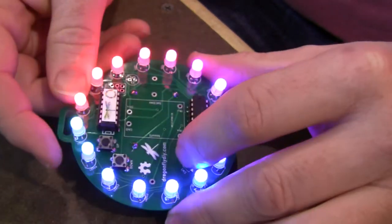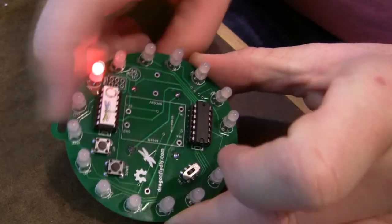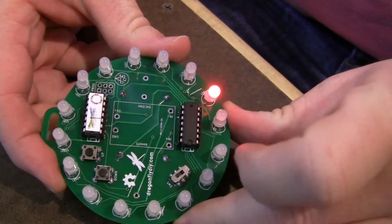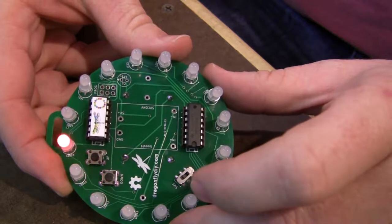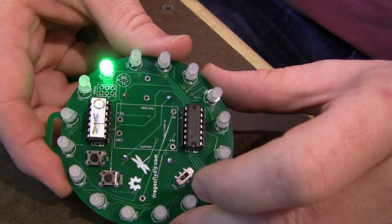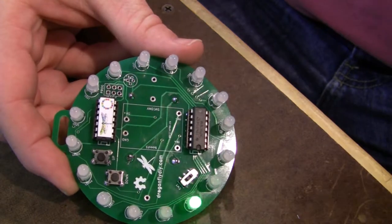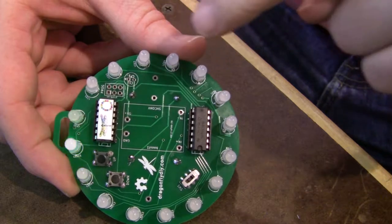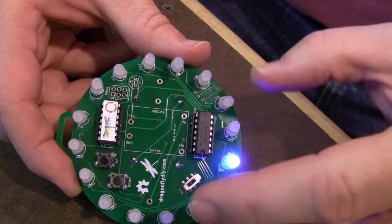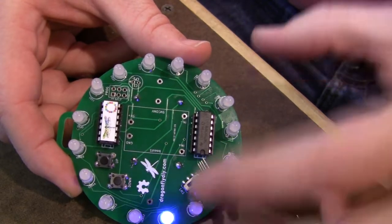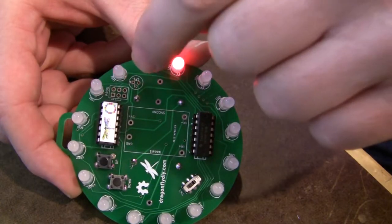Now there's a test mode here that you can use. If you hold down the bottom button and turn it on, it comes up in test mode where it lights up all of the red LEDs in order. And then when it gets done, it does green, and then it does blue. So you can use that to test. If it's blinking along and it goes red, red, red, and then suddenly it does blue or something like that, or if two LEDs come on at the same time here, there's something wrong.